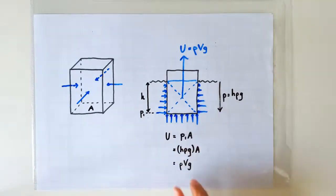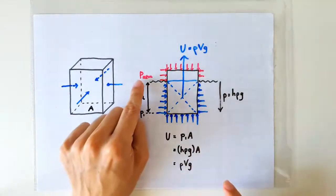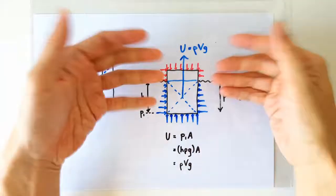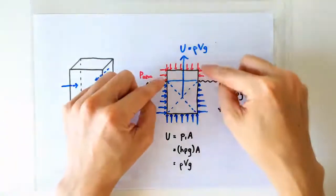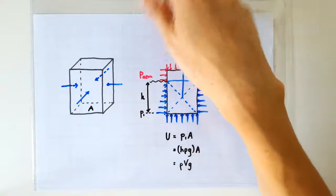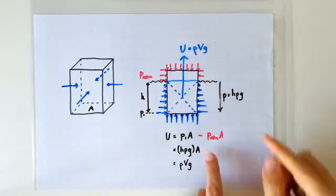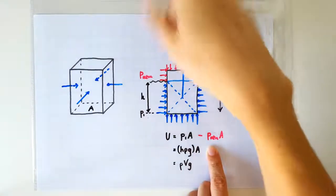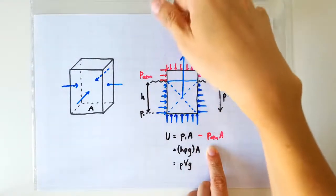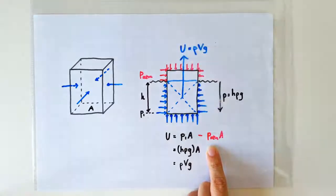Wait, what about the atmospheric pressure? Don't we also have pressure forces acting on this part of the cuboid? Don't we also have a pressure force acting down on the top of the cuboid? That's right, so we actually have to subtract away the downward force that the atmospheric pressure exerts on the top surface of the cuboid.